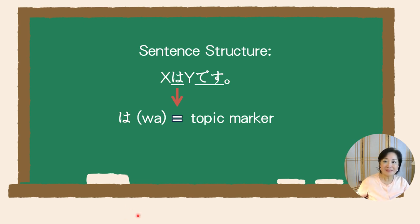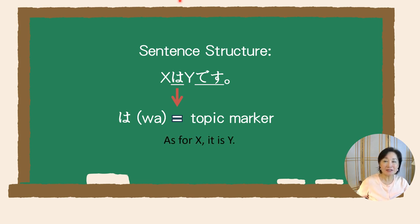This hiragana は is pronounced as wa and is a particle. The particle shows the relationship between words and is a unique grammatical feature of the Japanese language. This particle wa is called a topic marker, and whatever noun comes before this particle is the topic of the sentence.